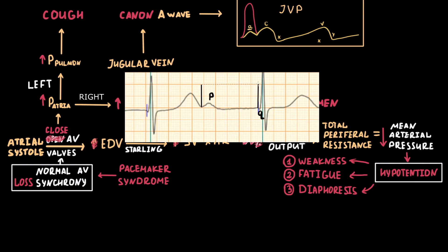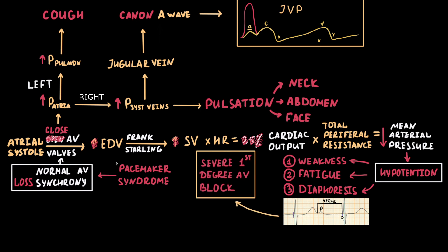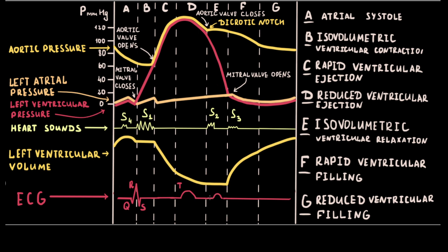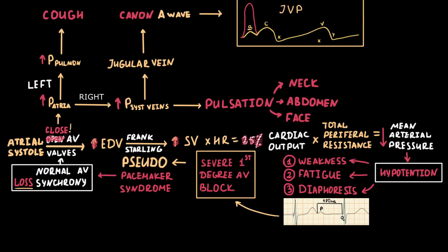In severe first-degree AV block, the P wave can be near to or inside the ST segment or T wave of the previous contraction. This causes AV synchrony loss, as in pacemaker syndrome — which is why it is called pseudo-pacemaker syndrome. When the P wave is near the previous T wave, atrial contraction occurs during the isovolumetric ventricular relaxation phase, when AV valves are closed. Therefore, the atrial kick does not pump additional volume to the ventricles, end-diastolic volume decreases, stroke volume decreases, and cardiac output decreases, leading to a fall in mean arterial pressure, hypotension, weakness, easy fatigability, and diaphoresis.